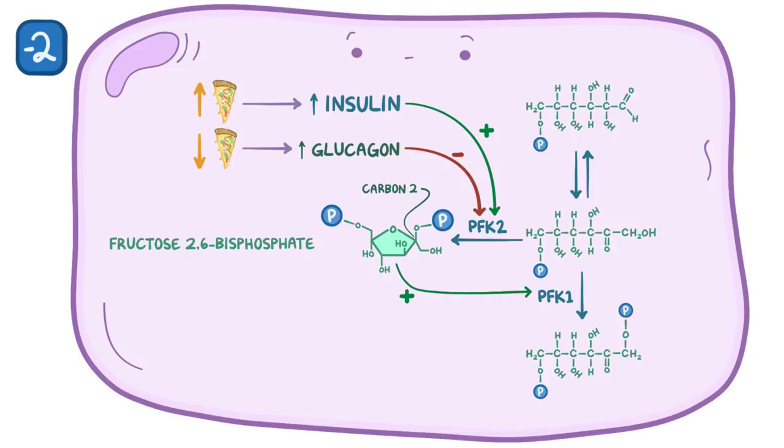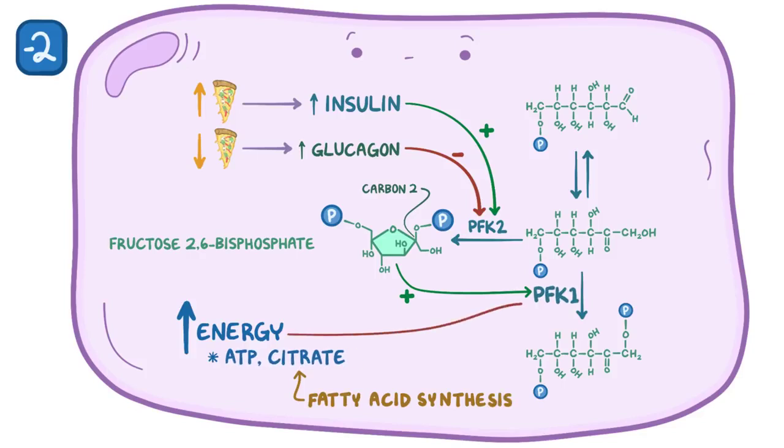PFK1 is also inhibited in other ways. For example, when cells are in high energy states, there's a ton of ATP floating around as well as citrate, because that's a byproduct of fatty acid synthesis. Both ATP and citrate inhibit PFK1, because the cells have lots of energy and don't need to generate even more.